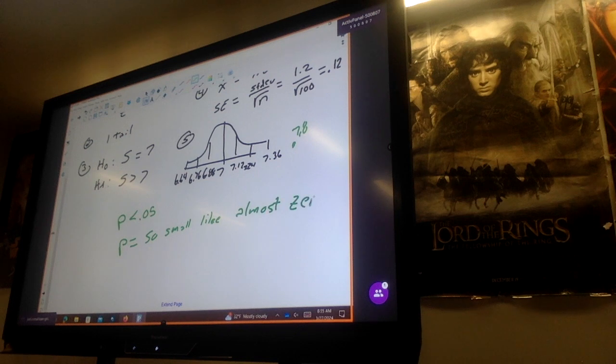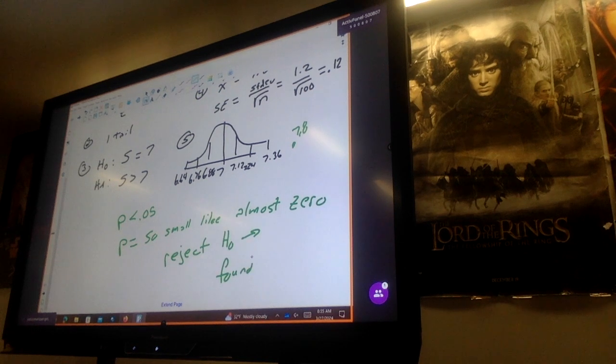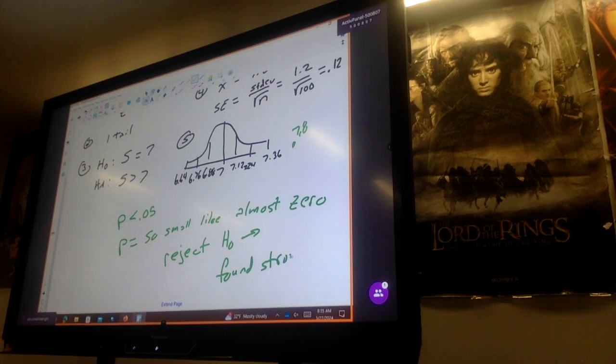Yeah, so we reject the null. We found strong evidence against the null. Okay, state the conclusion. The alpha is 0.05, so number seven, if they told us the alpha is 0.05.